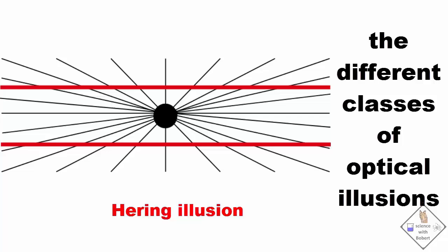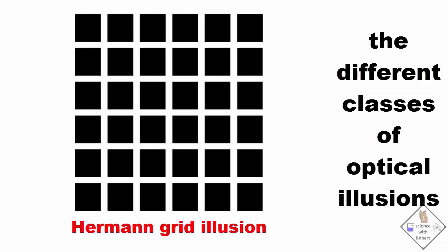This is a Hermann grid illusion. The small grayish dots at the intersections are actually not there. Our brain puts them there. The phantom dots disappear though if you look directly at them.